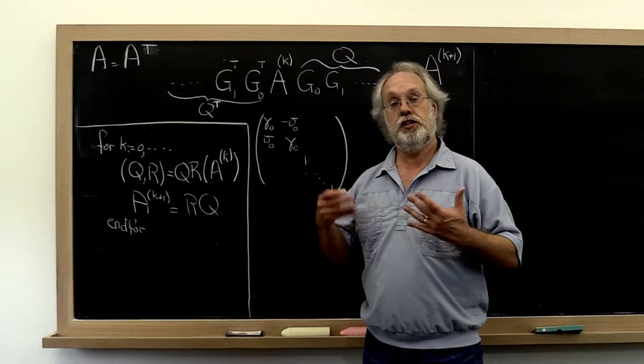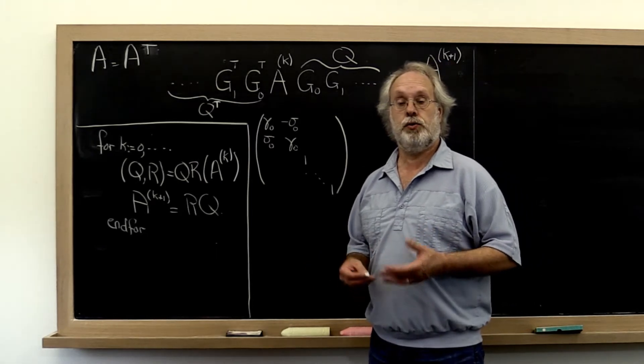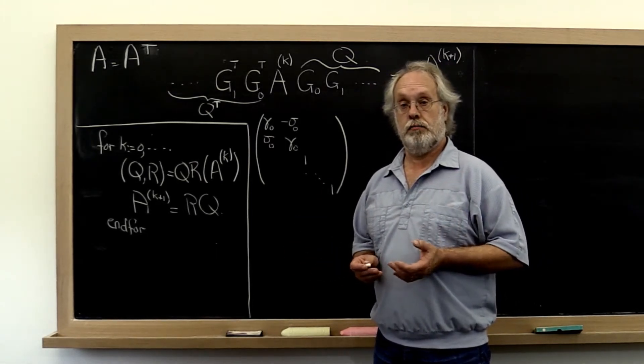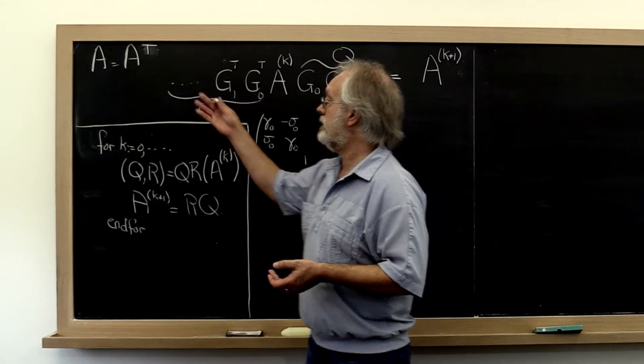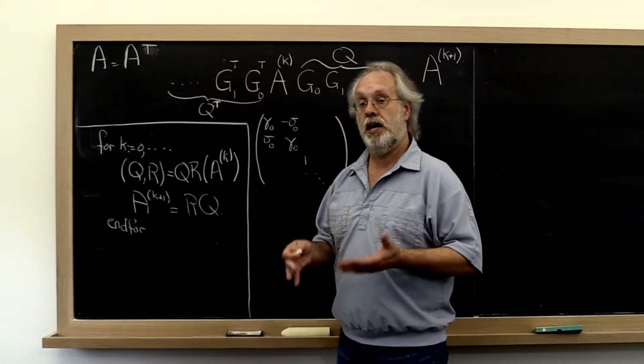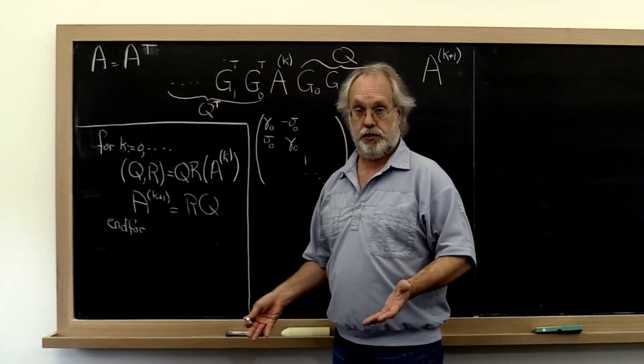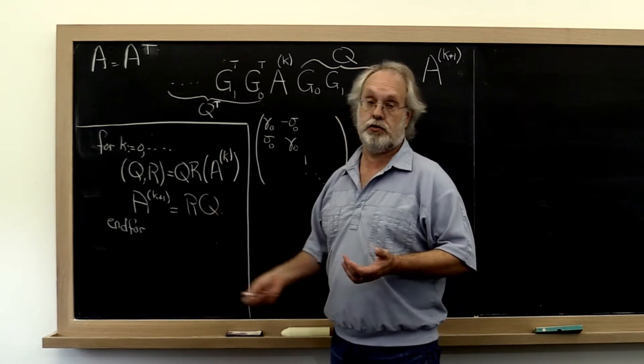Let's have a look at how the implicit Q theorem fits into the QR algorithm. Now remember, we've started by taking our matrix A and making it into a tridiagonal matrix, and now we're iterating with the tridiagonal matrix.